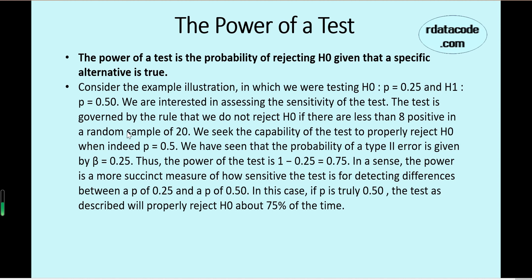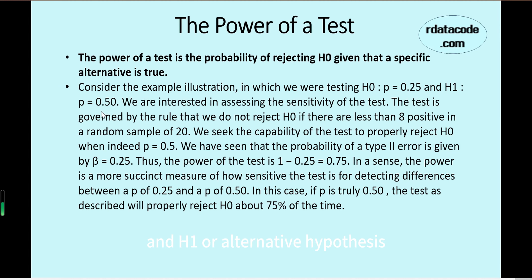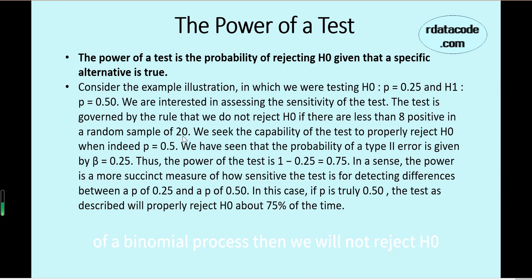For example, in a random sample of 20 binomial trials, H0 states the success rate is 0.25 for each trial, and the alternative hypothesis H1 states the success rate is 0.5. If we specify 8 positives as the decision rule: if we get fewer than 8 positives in a sample of 20 we will not reject H0, otherwise if we get more than 8 positives we will reject H0 in favor of H1.